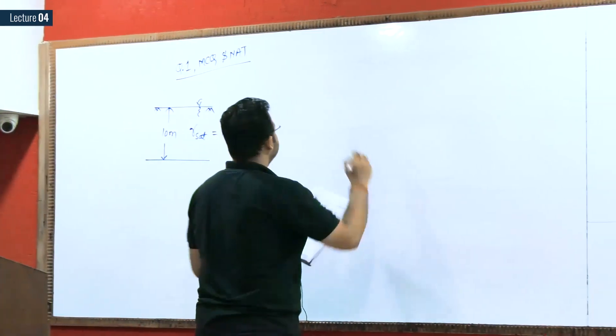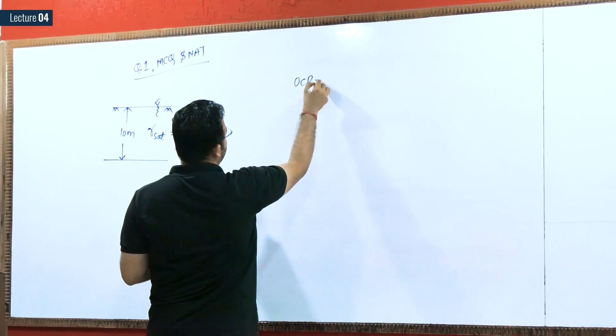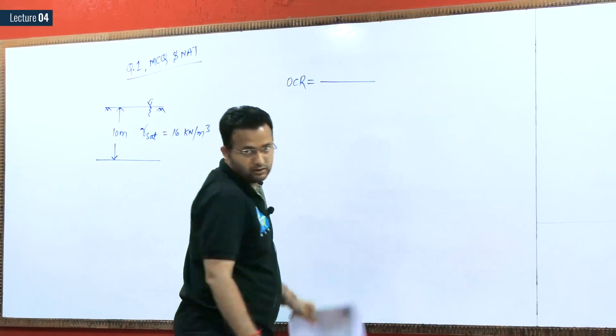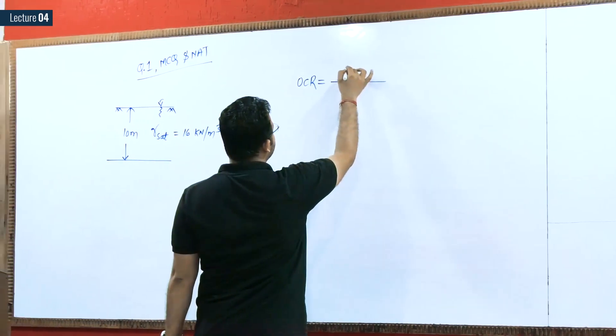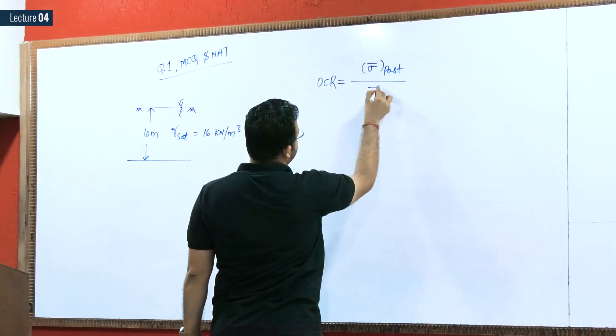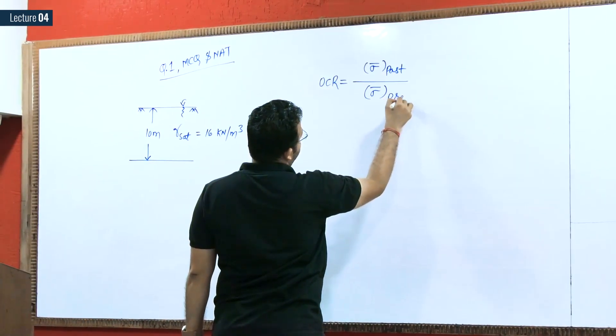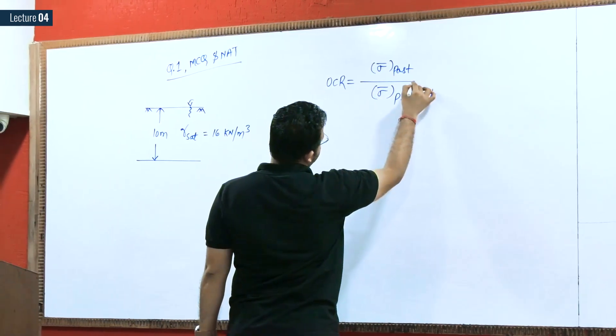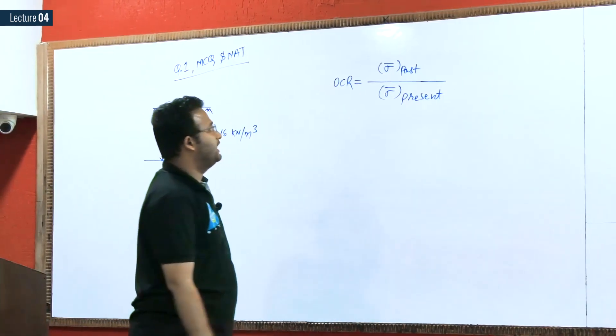Gamma saturated is also given in the problem as 16 kN/m³. They want me to calculate the over consolidation ratio OCR. Over consolidation ratio means effective stress in the past condition divided by effective stress in the present condition.